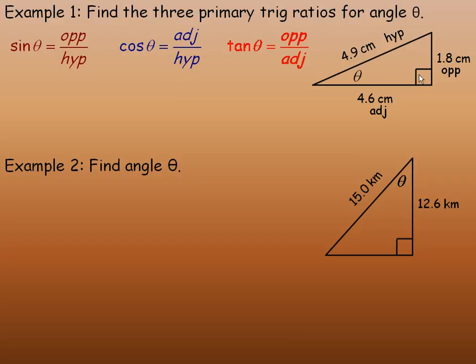So now that we have the three sides labeled, we can write out what sine, cos, and tan of the angle is equal to. The sine is the opposite over the hypotenuse side, so we would take 1.8 and divide it by the 4.9. And so 1.8 divided by 4.9 is approximately 0.3673.